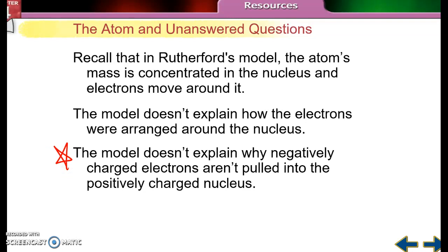Because think about a magnet. If you put a negatively charged end of a magnet near a positively charged end of a magnet, they're going to come together really quickly. You're going to have to hold them apart. So why don't atoms just collapse? Because the electrons fall into the protons, into the nucleus.